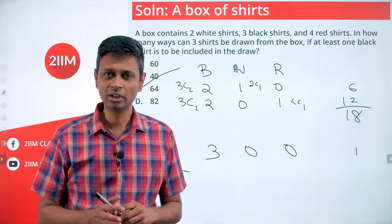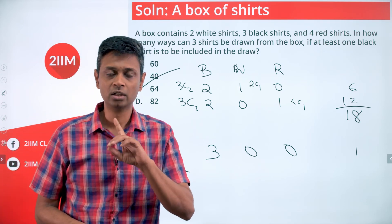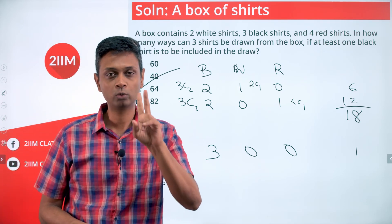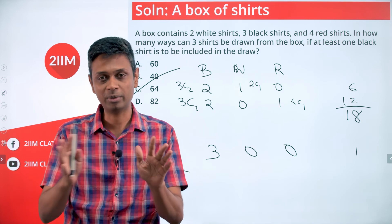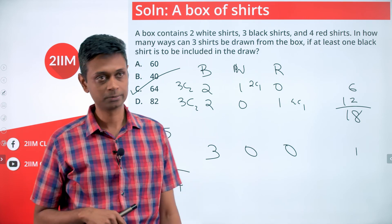To do this methodically: since we need at least one black shirt, it could be one black, two black, or three black. After fixing the black shirts, go step by step and fill in the remaining slots with red and white shirts.